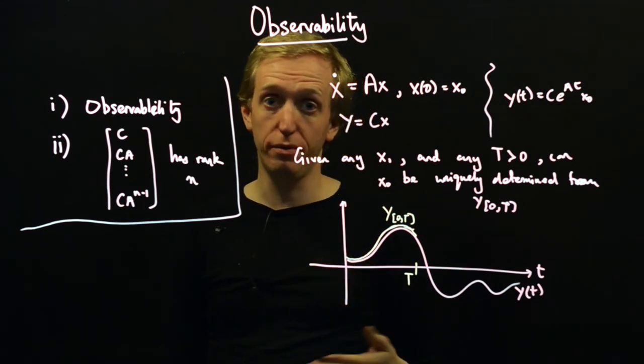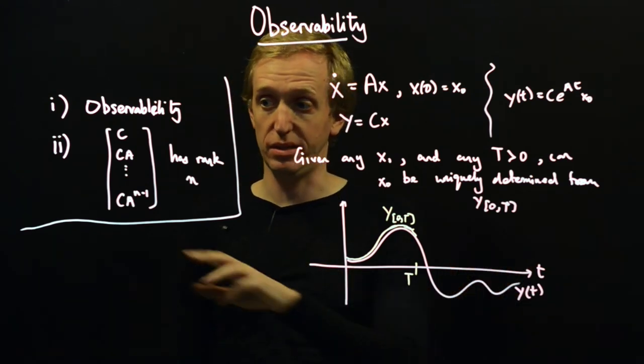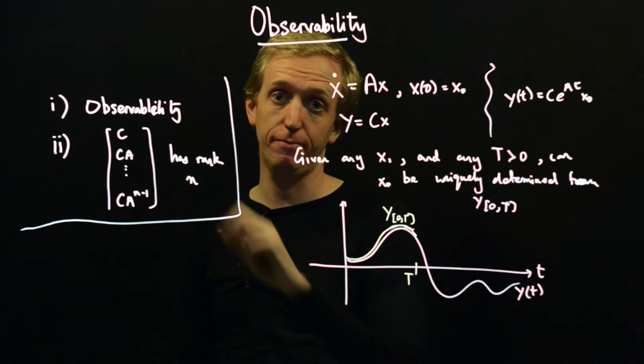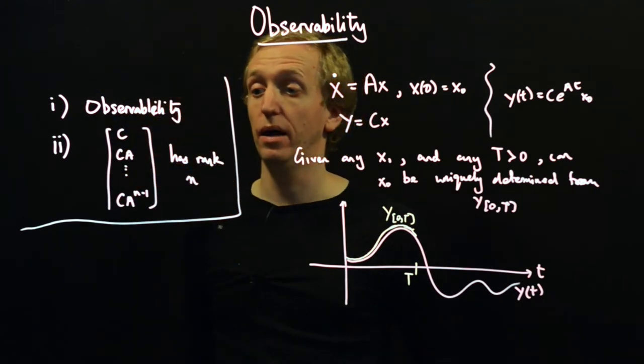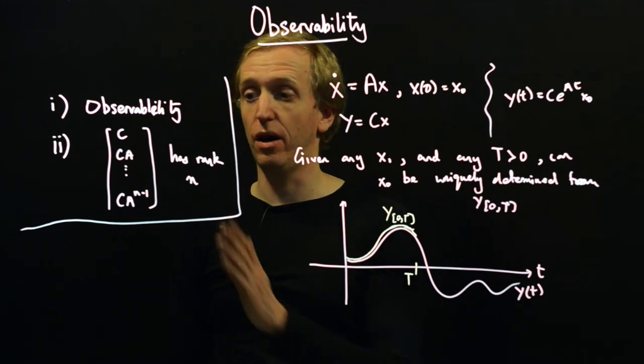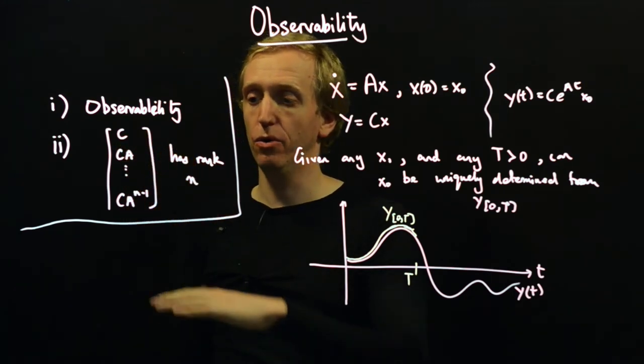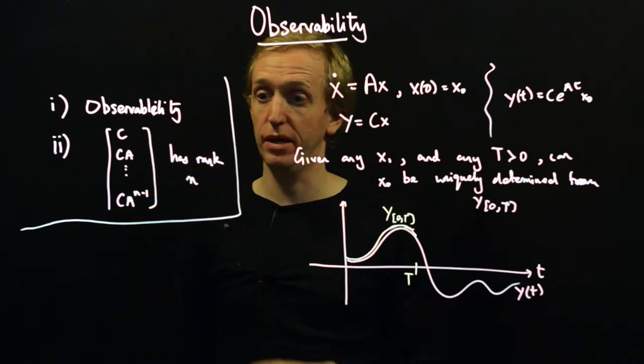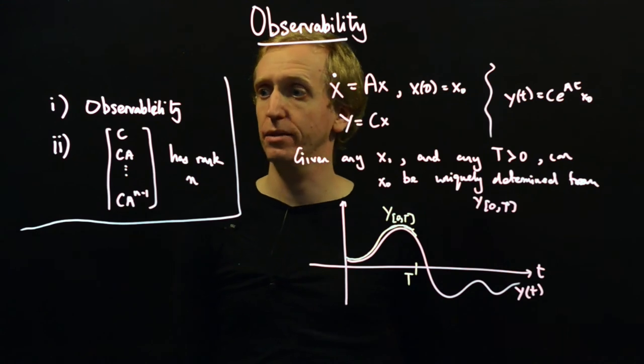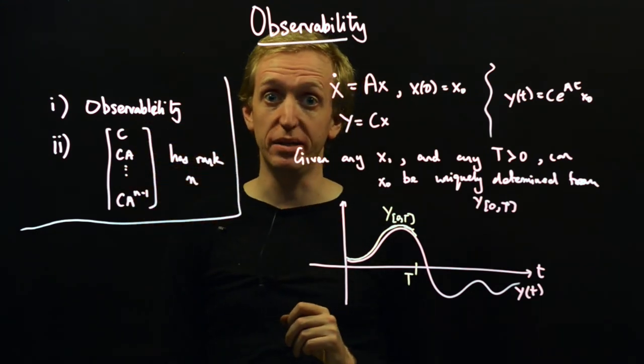If you have more than one output, everything still holds. This time this matrix will no longer be square. In fact, it's going to be tall. And the question is: are there N linearly independent rows? Or are there N linearly independent columns? And if so, then it has full rank.